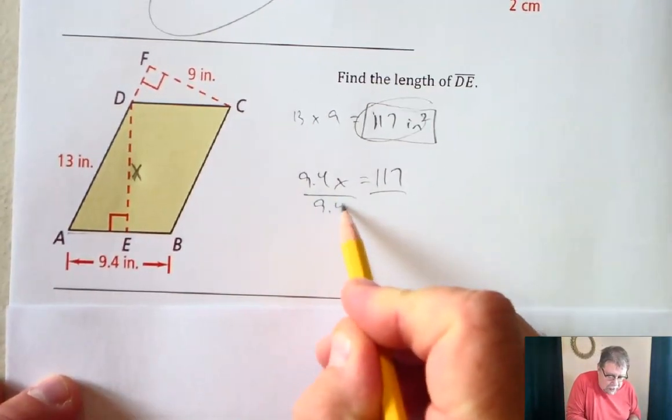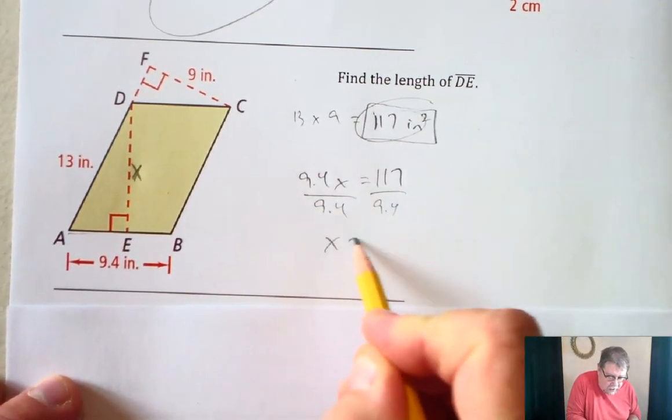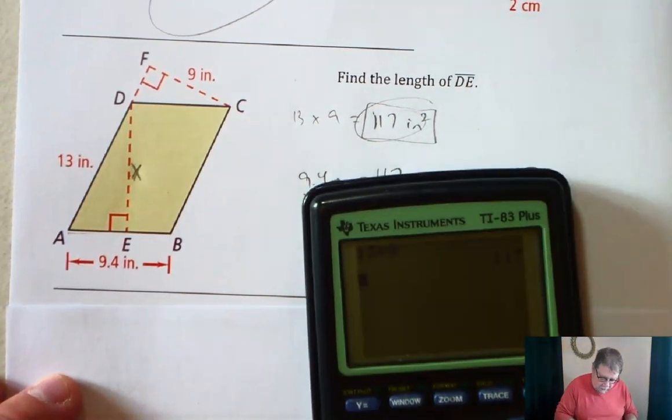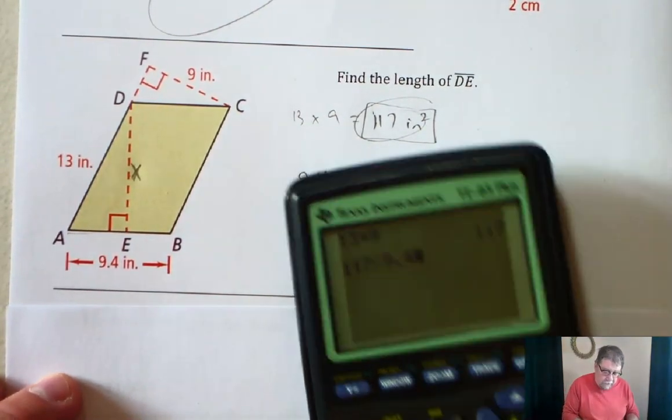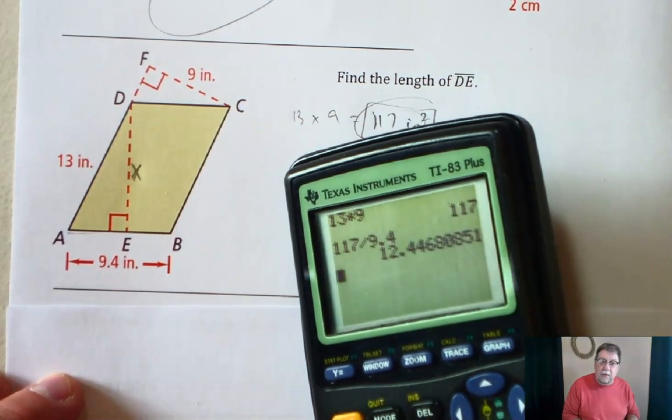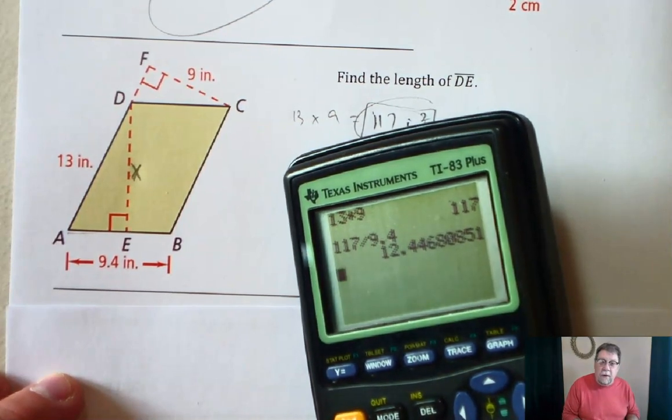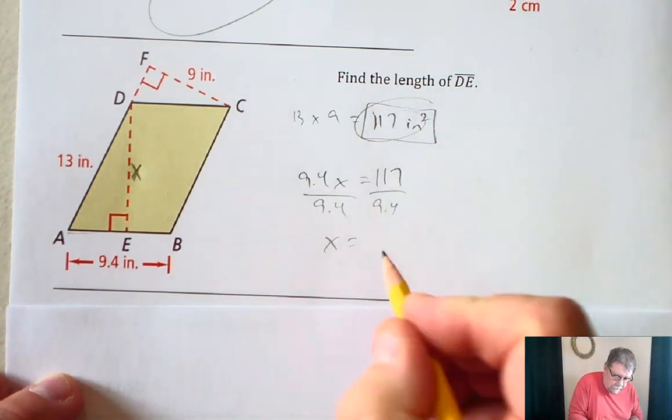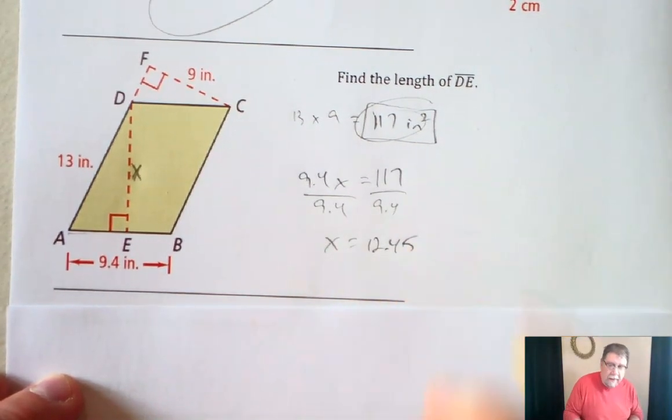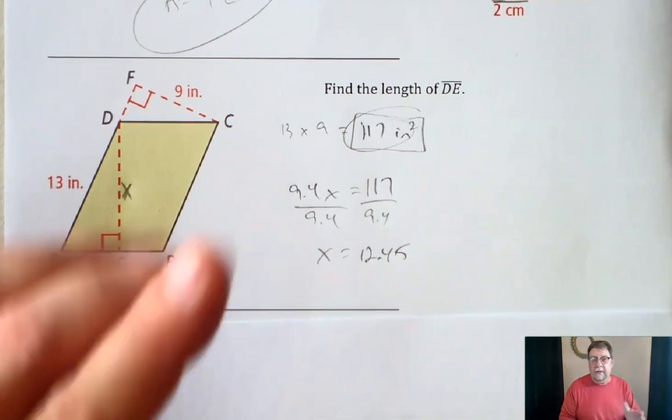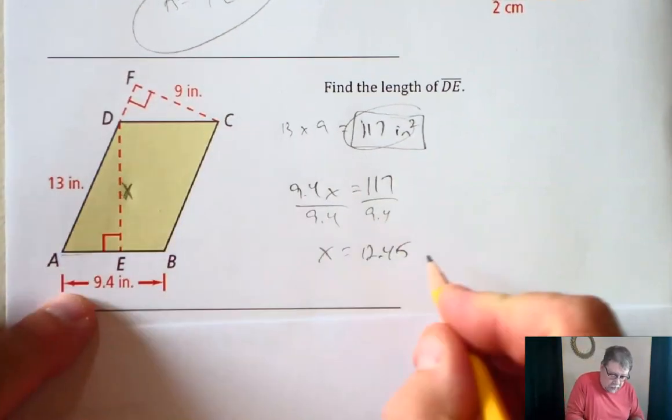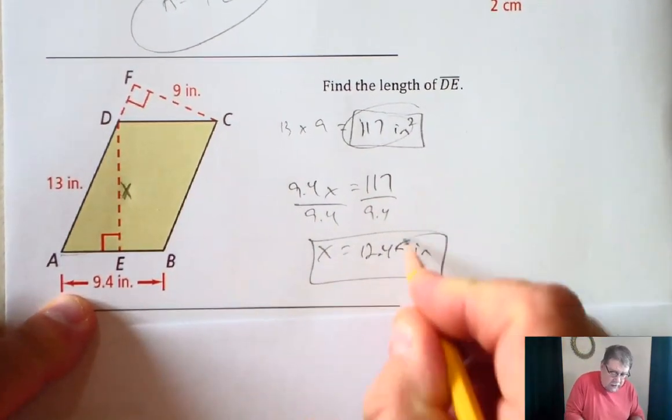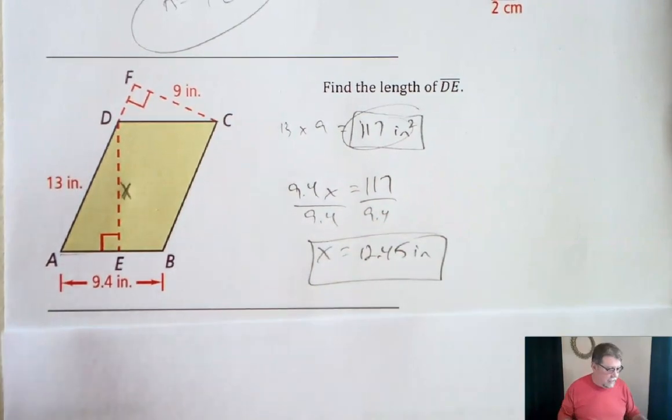So now I'm simply dividing by 9.4, and X would equal 117 divided by 9.4, and that is 12.45. And now we are not in square units because it's just a length, so it's just simply inches. And so this is our answer to the length of DE.